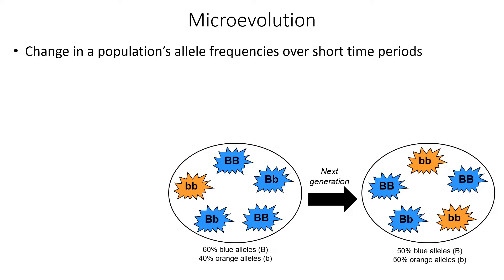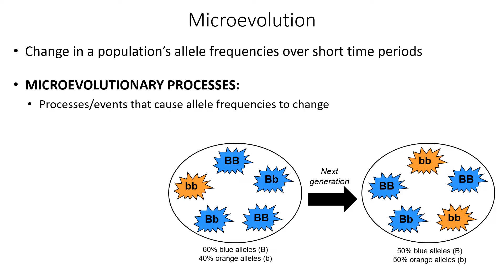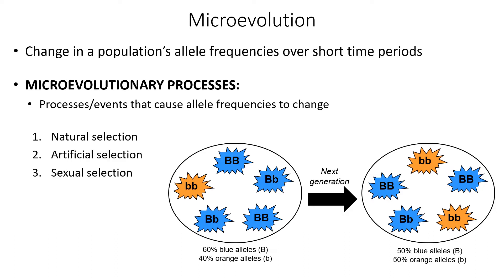Since the allele frequencies in this population changed from one generation to the next, the population is evolving. If we want to know what's causing this, we need to learn about microevolutionary processes — the processes and events that cause allele frequencies to change. There are six different microevolutionary processes you need to know: natural selection, artificial selection, sexual selection, genetic drift, gene flow, and mutation. In this video, we'll define and explain each one.